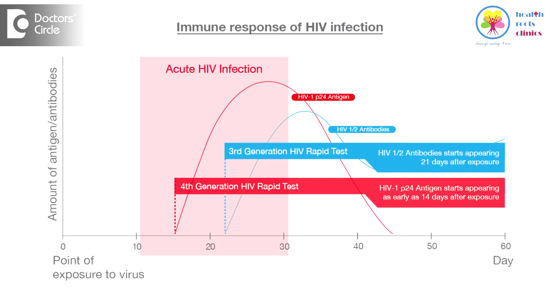The second category of tests directly detect the antigen of the HIV virus. Now there is a fourth generation combined antigen and antibody test, which can reduce the window period — the time during which infection has happened — but the antibody test might be negative.